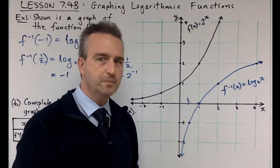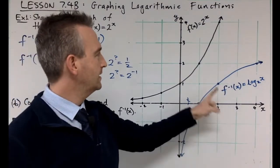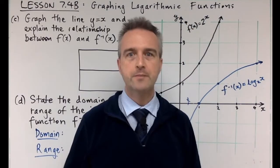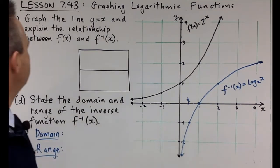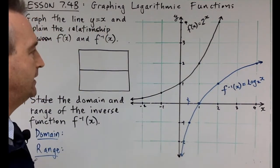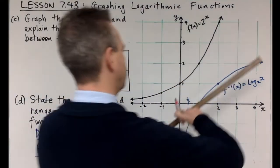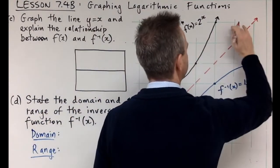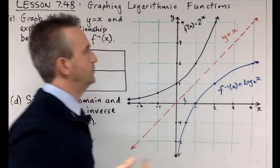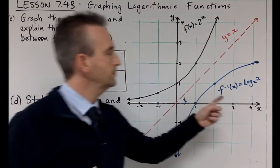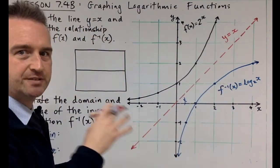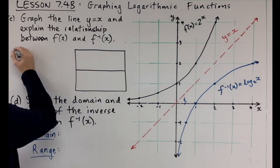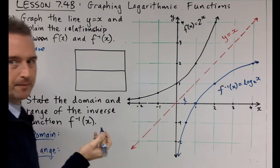That is what a logarithmic function looks like. It's the flipped version of the exponential: the original has the x-axis as an asymptote, and the log function has the y-axis as an asymptote. For part c, we draw the line y equals x and explain the relationship: f of x and f inverse of x are reflections of each other about the line y equals x. Make sure to label all three functions on the graph.